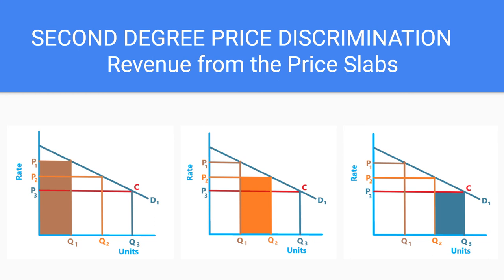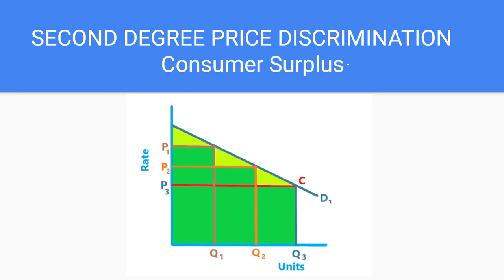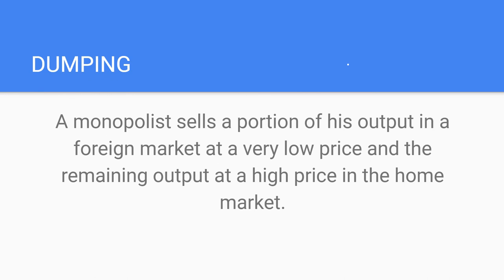Till the consumption of Q1 units the price is P1, so the brown area is the revenue. For Q1 to Q2 units consumed it is the orange shaded area, and the cyan shade is the revenue for Q2 to Q3 units consumed. Adding them up gives the total revenue for the different price slabs, and the light green areas represent consumer surplus for every price slab. Finally, there is another form of price discrimination called dumping, where a monopolist sells a portion of output in a foreign market at a very low price and the remaining output at a higher price in the home market.